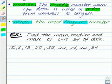Let's go ahead and do an example. Find the mean, median, and mode of this set of data: 35, 8, 12, 50, 55, 22, 34, 22, 34.